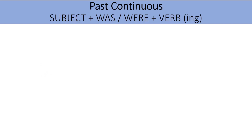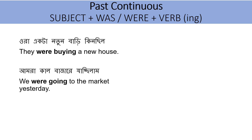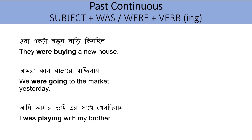Past Continuous. The structure is: Subject plus was/were plus verb in its -ing form. ওরা একটা নতুন বাড়ি কিনছিল — They were buying a new house. 'Were buying': 'they' is the subject, followed by 'were', then the -ing form of 'buy' → buying. আমরা কাল বাজারে যাচ্ছিলাম — We were going to the market yesterday. আমি আমার ভাইয়ের সাথে খেলছিলাম — I was playing with my brother.